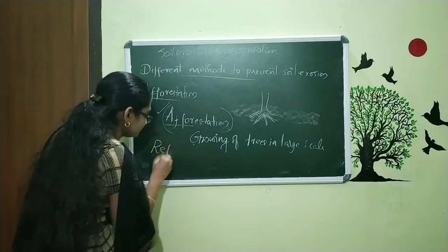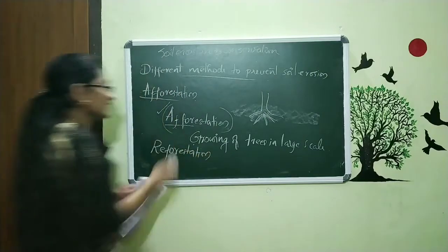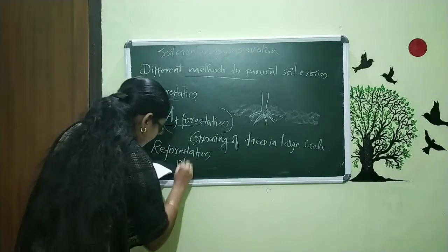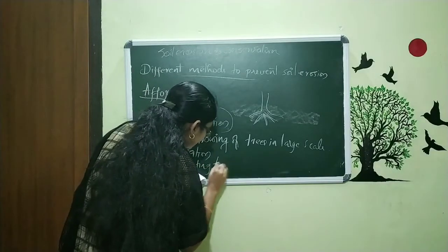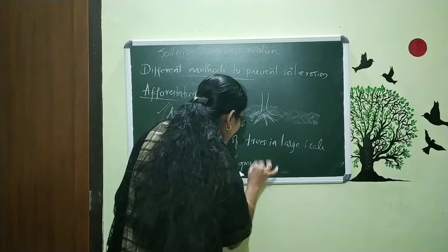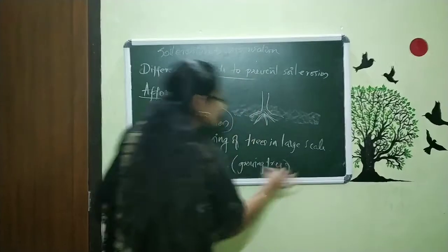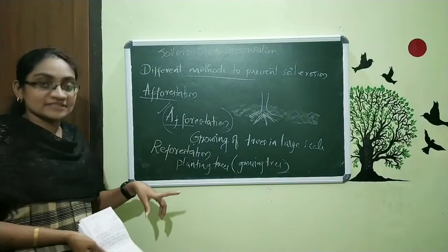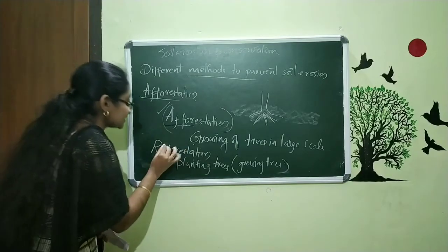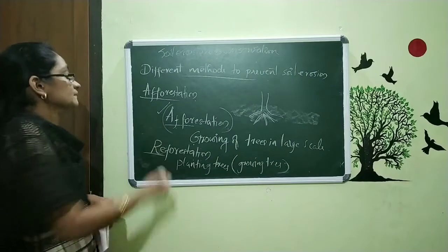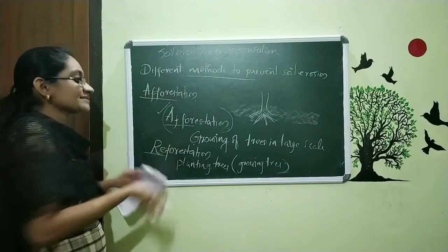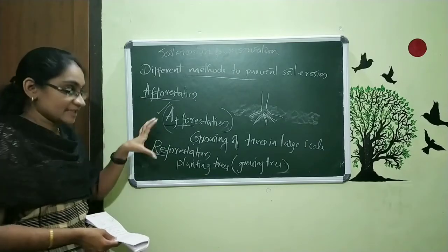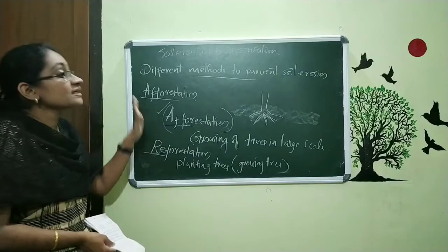Within the textbook, you can also see the term reforestation. Reforestation means planting trees or growing trees within the place where trees were cut — that is, making the forest again. So afforestation, reforestation, and deforestation are related terms. The key point to remember is that afforestation prevents soil erosion because growing large numbers of trees means large numbers of roots that hold the soil.